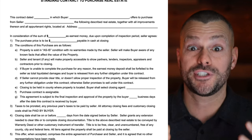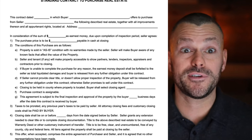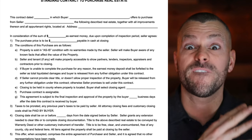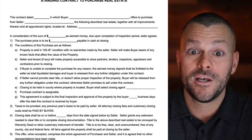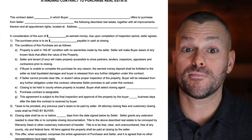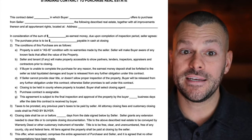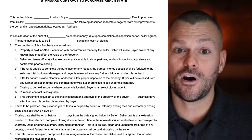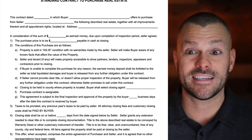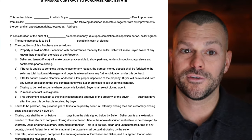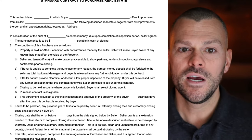That part is going to be the purchase price. Maybe I'm willing to purchase a property at $100,000, but that property is really worth $140,000 or $150,000. You've got to get great deals in order to be able to wholesale them. So we put the actual purchase price amount there on number one. Number two, the conditions of this purchase are as follows — and notice there are going to be some CYA clauses kind of buried in this contract.